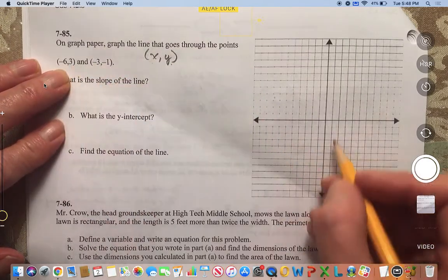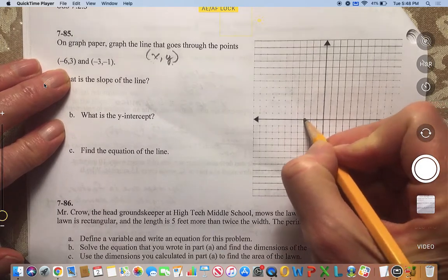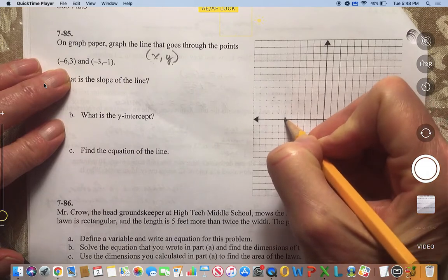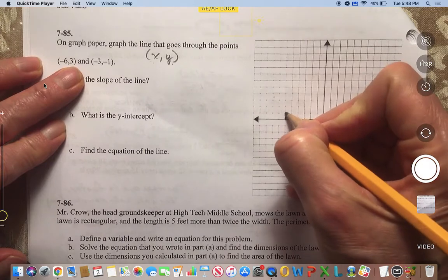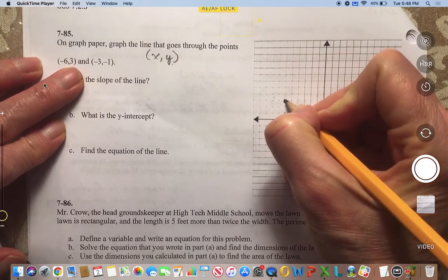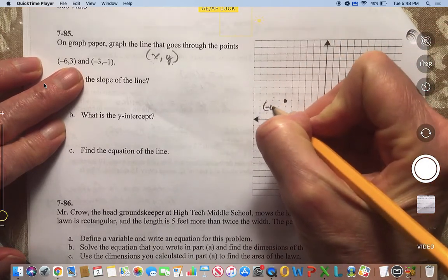Okay, so negative 6. I will find the x that is negative 6. That's right here. And then it's a positive 3 is the y-coordinate. So we have to go up 1, 2, 3 from there. So there's our first point. That's (-6, 3).